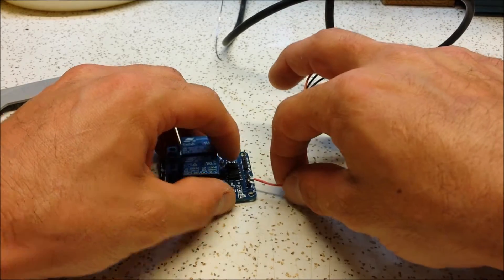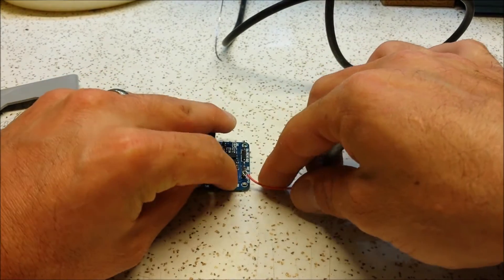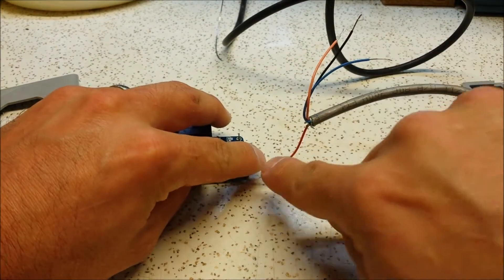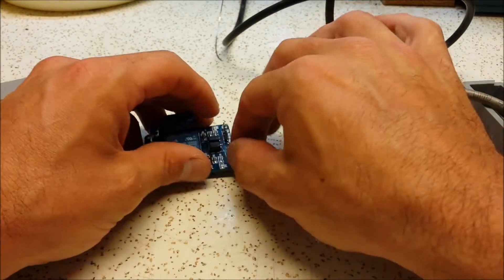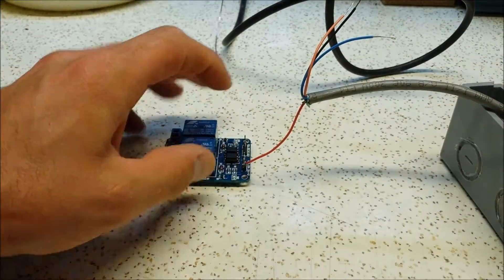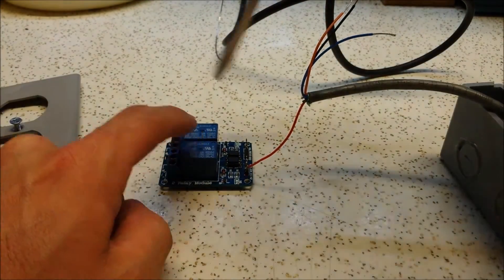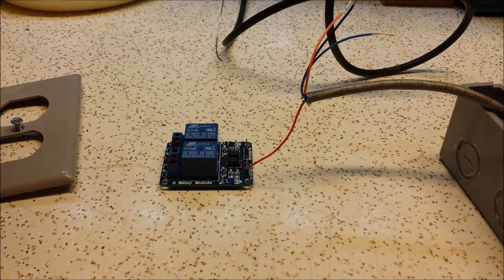And what that'll do is that'll always be hot. And that way the Arduino doesn't have to give it much current or the relay won't pull much current because it'll pull from this red wire, which will be hot all the time. Now the first set of relay blocks I bought actually had little screw terminals.